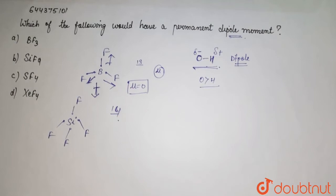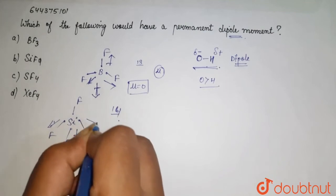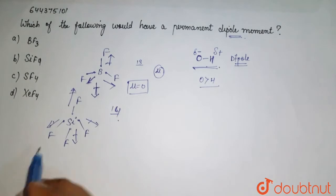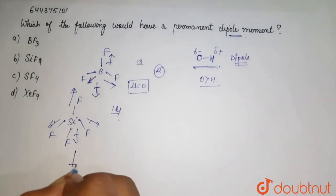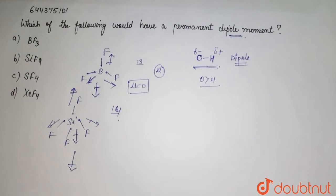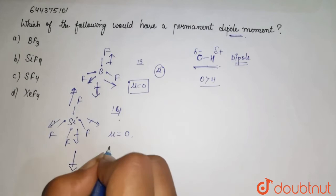So it withdraws electron density over here, and this fluorine over here. The resultant of these vectors comes out to be this side and this side. They cancel each other, so again this dipole comes out to be zero.